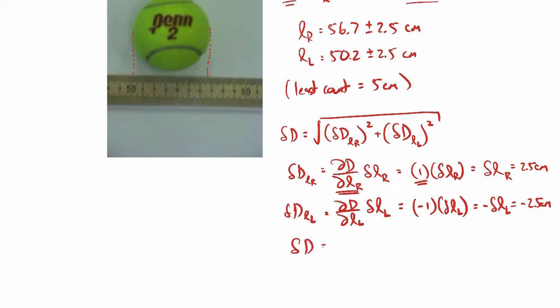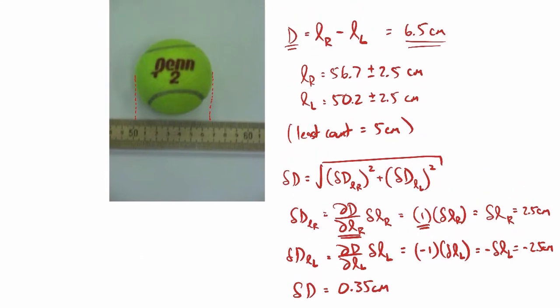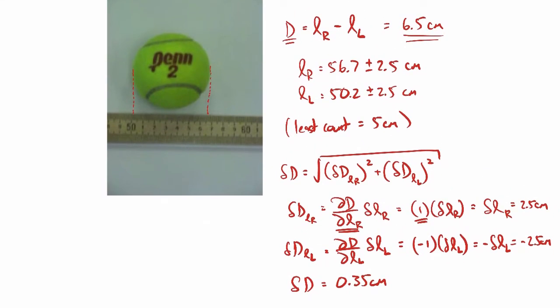When you work out the numbers, the absolute uncertainty in the diameter comes out to be 0.35 centimeters. So my diameter measurement should be 6.5 plus or minus 0.35 centimeters. That's the diameter of our tennis ball, including our uncertainty.